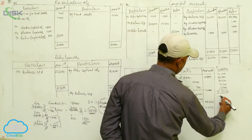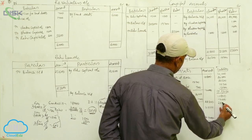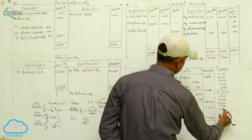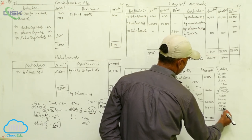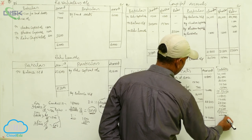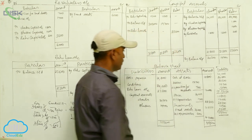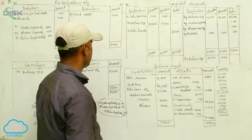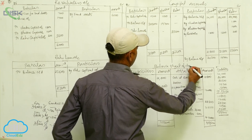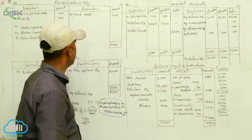On the assets side: 10,800, 12,000, 28,300, 10,500, and 42,000 — also totalling 1,03,600. The balance sheet is tallied. This is the balance sheet of the continuing partners Chandra and Baskar, completing problem number 13.